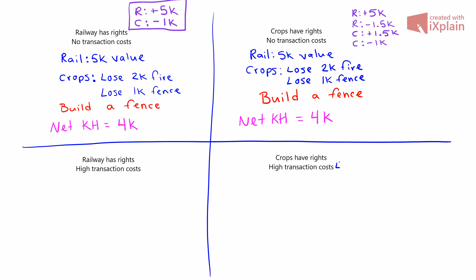On to situation three, where the crop owners again have the rights but we have high transaction costs — $4,000 in this situation. The setup is exactly the same: the operation of the rail is valued at $5,000, the crops if lost to fire cost $2,000 in lost crops, or we can build a fence for $1,000.